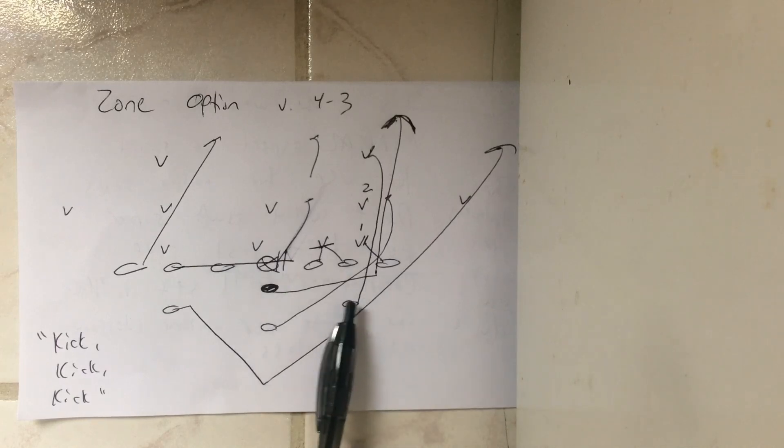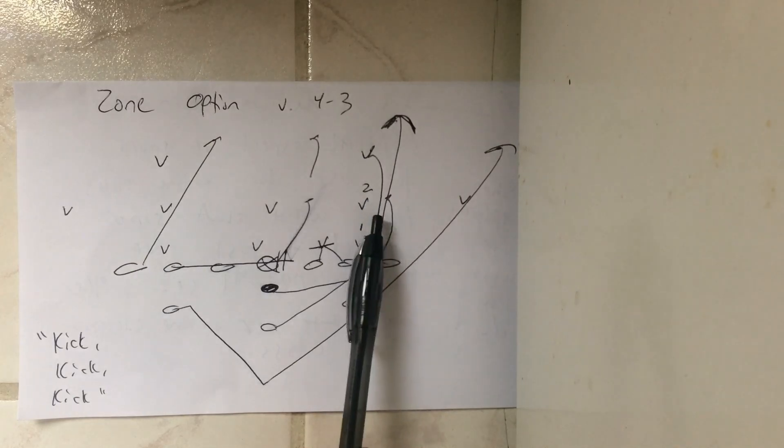The A-back is the lead player. He's clearing the level, so he steps with his inside foot. He doesn't touch number two because he belongs to the B-back, but he's going to end up on the safety.